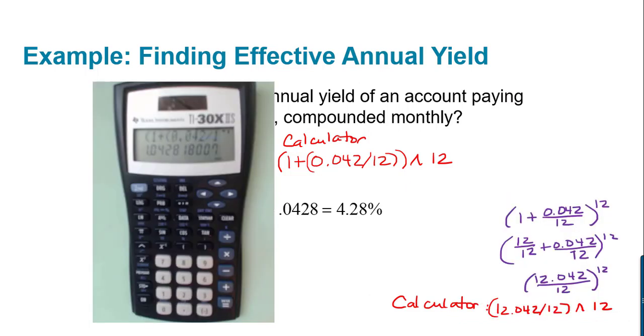Another approach to this problem, this is like my little thing that I like to do, instead of having to use all of those, quite so many parentheses, I like to add the 1 by making it 12 over 12. So what that gives you is 12.042 divided by 12, one fraction raised to the 12th power. So let's try entering it that way. So we have parenthesis 12.042 divided by 12, close parenthesis raised to the 12th power, and you get the same result.